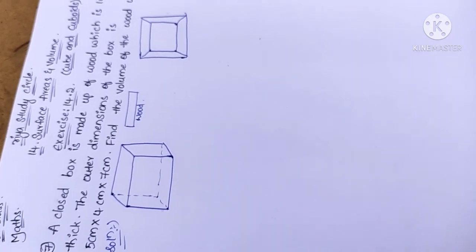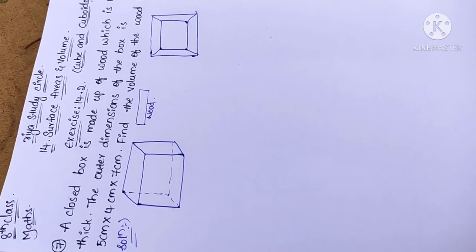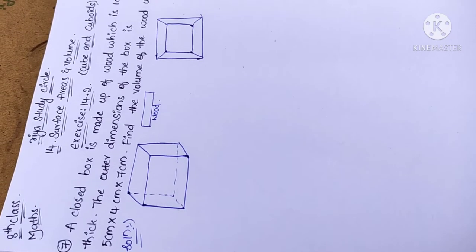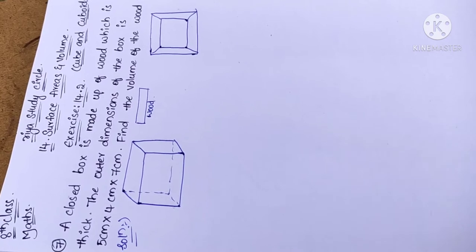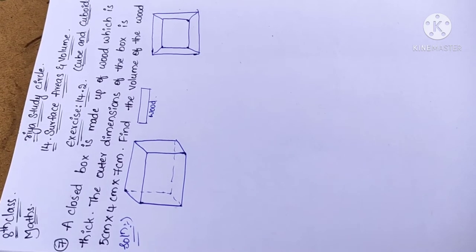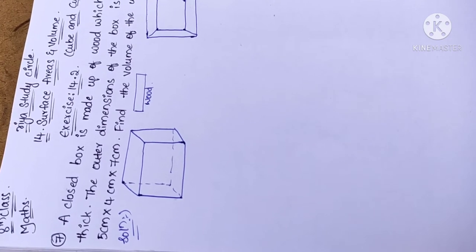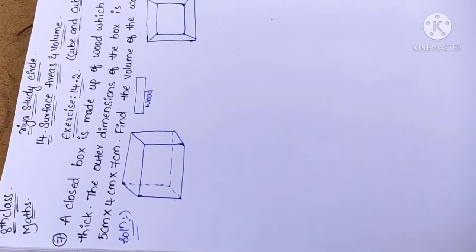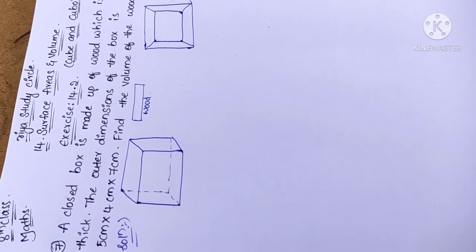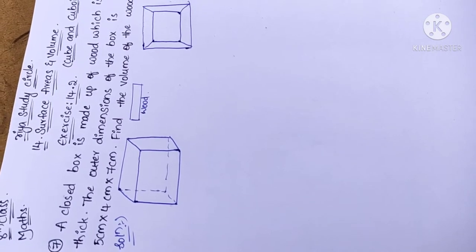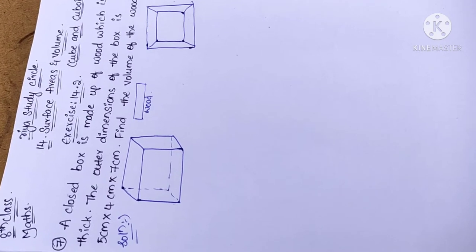Problem 7: A closed box is made up of wood which is one centimeter thick. The outer dimensions of the box are 5 cm × 4 cm × 7 cm. Find the volume of the wood used. Here they gave the outer dimensions as 5 cm × 4 cm × 7 cm.